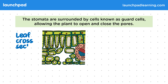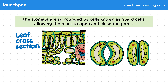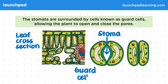This image shows a leaf cross-section. Notice that the opening underneath is surrounded by guard cells. These guard cells control the size of the opening, or the pore, that we call the stoma. This is the view that we would get of the guard cell if we were looking into the leaf from the underside. Here we see a single open stoma and one closed.